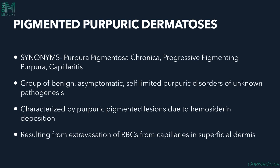Pigmented Purpuric Dermatosis has several synonyms: 'purpura pigmentosa chronica' because it is a chronic disorder, 'progressive pigmented purpura' because it is progressive, and 'capillaritis' because the capillaries are where the pathogenesis takes place. It is referred to as PPD in short form.